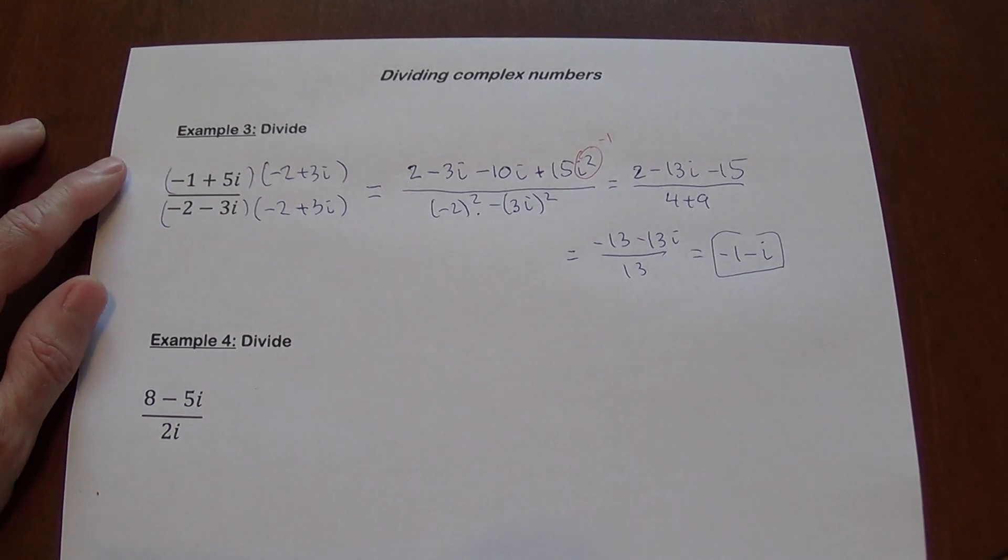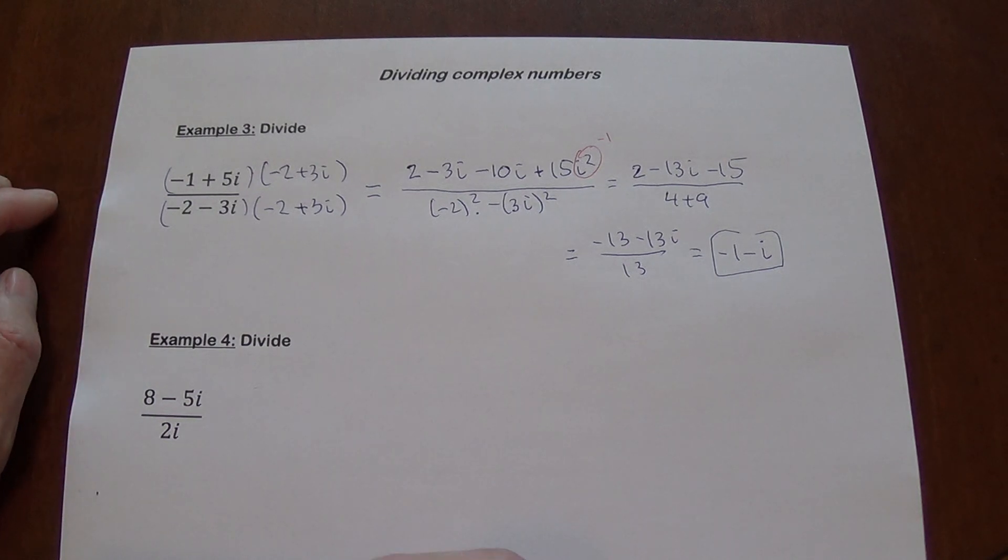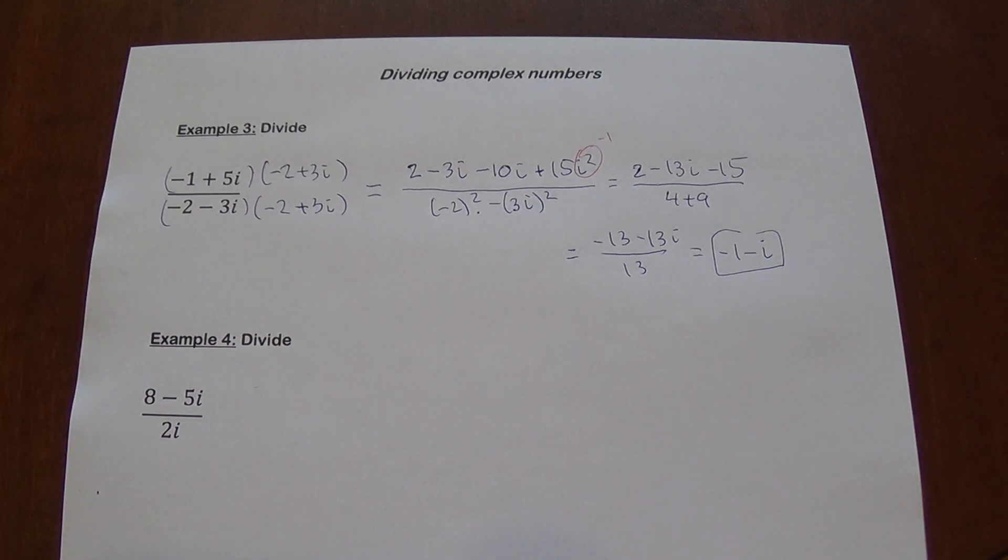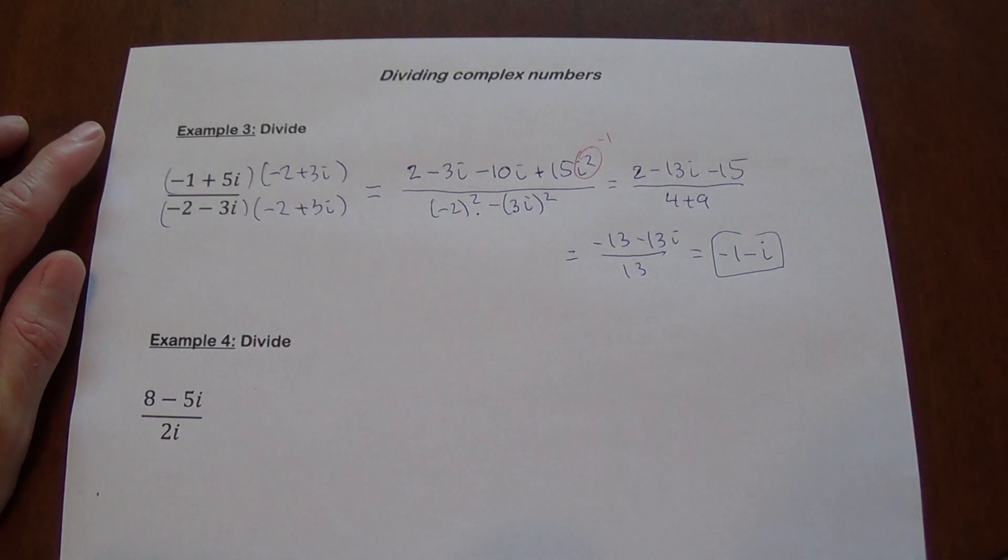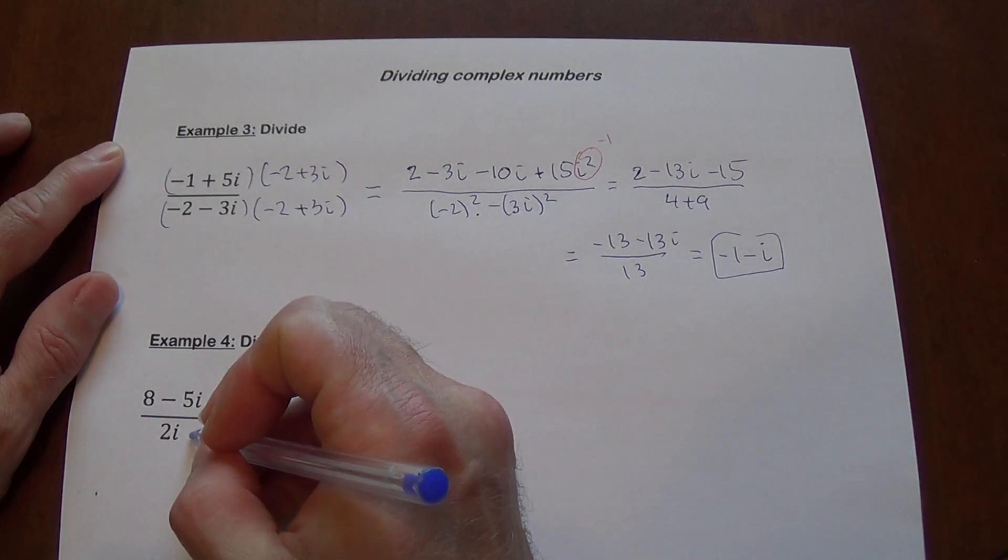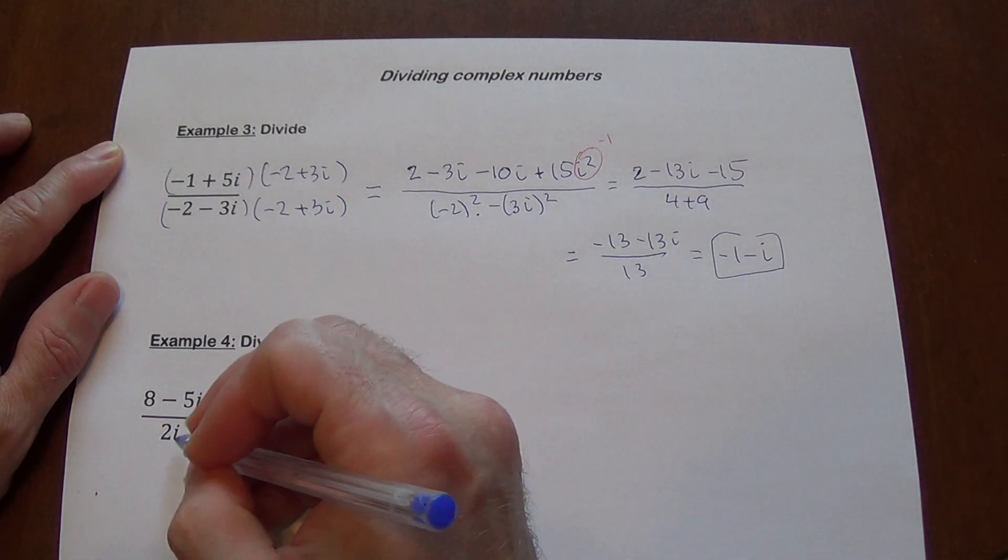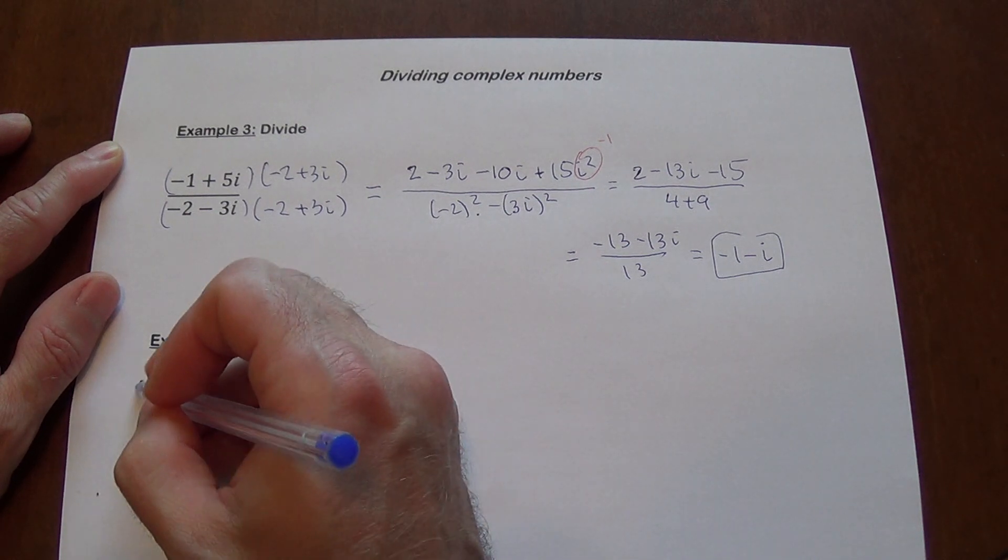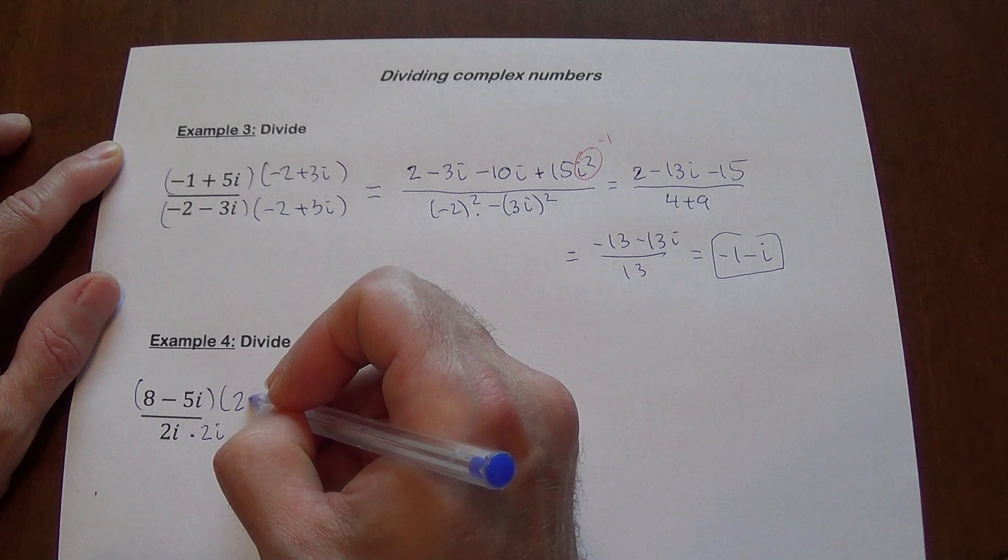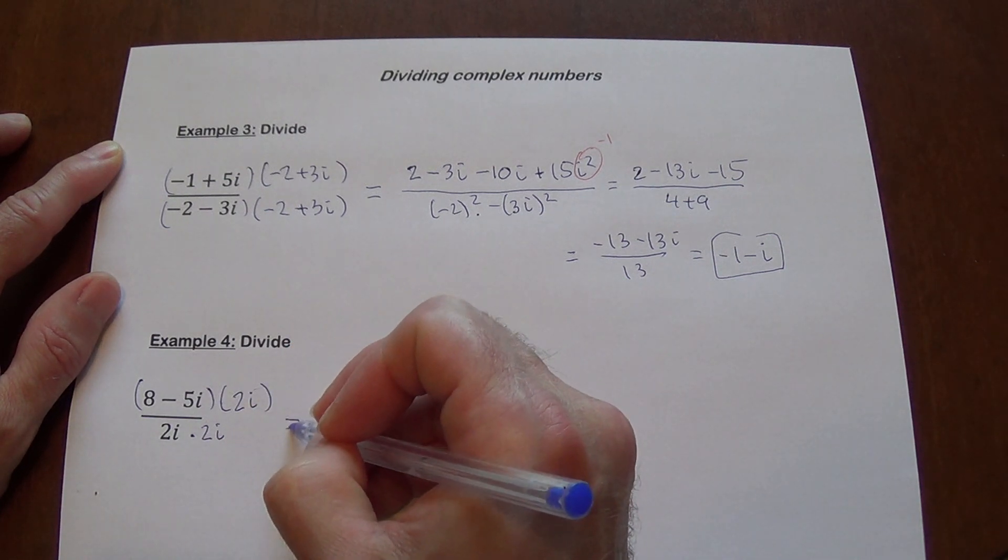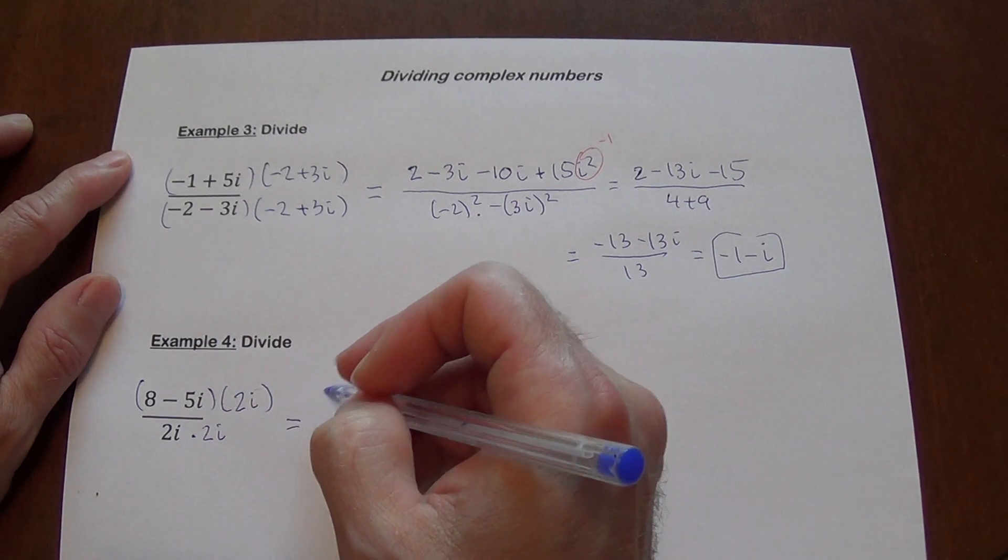And example 4. So example 4 is one tiny difference, because it does not have a true complex form, in this case a is 0. So when a is 0, you don't actually have to use the conjugate. You can just multiply by the same quantity, because this will give you a rational number. Although if you multiply by negative 2i, it's not going to be incorrect. It's going to give you the same result. But anyway, so multiply this.